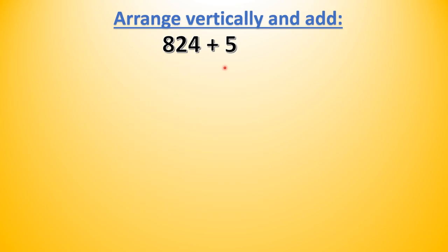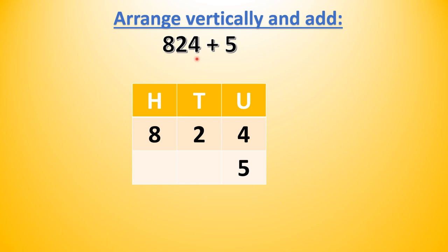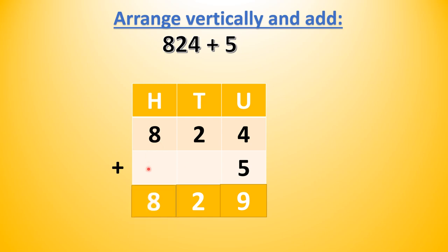824 plus 5. We write the place values: hundreds, tens, and units. In 824 we have 8 hundreds, 2 tens, and 4 units — so we write 8 in the hundreds column, 2 in the tens column, 4 in the units column. In 5 we have 5 units, so we write 5 in the units column. Now we write the addition sign. 4 plus 5 we get 9 units. 2 plus 0 gives us 2 tens. 8 plus 0 gives us 8 hundreds. So 824 plus 5 will give us 829.